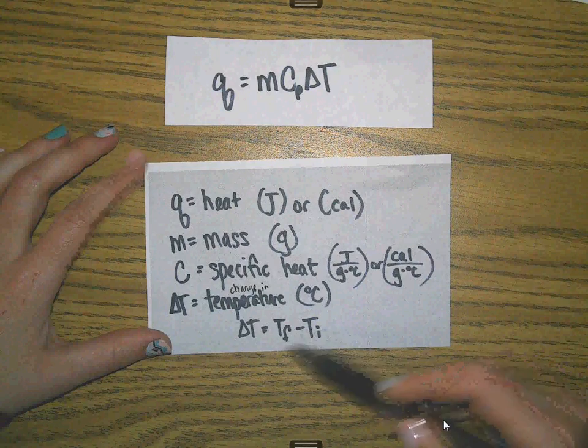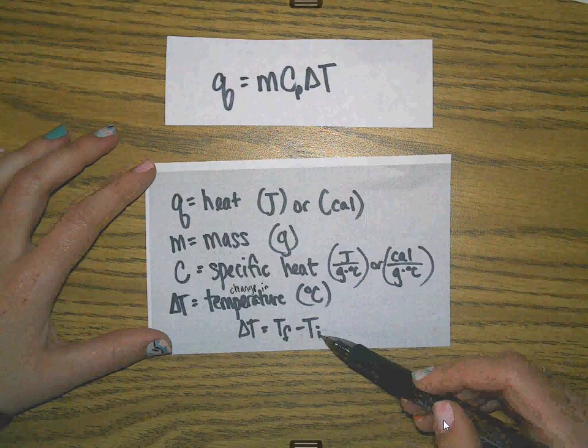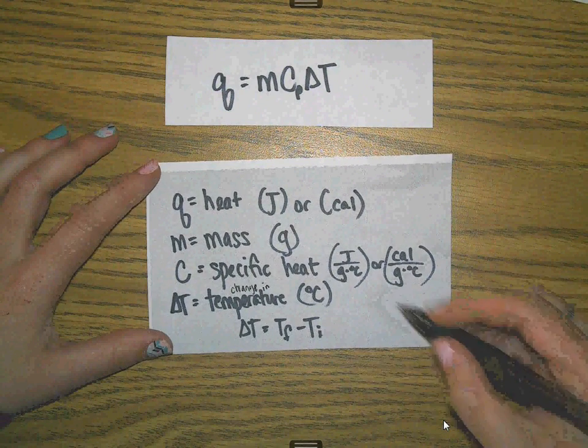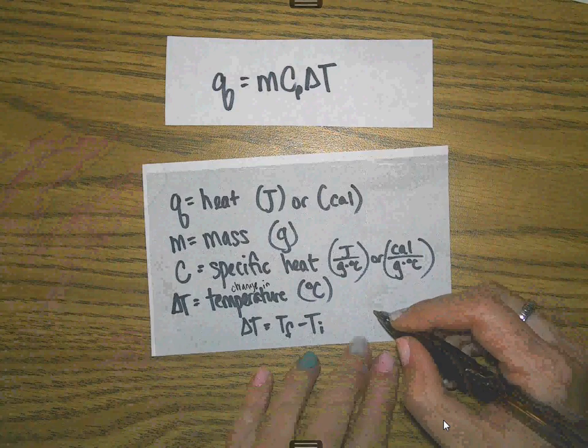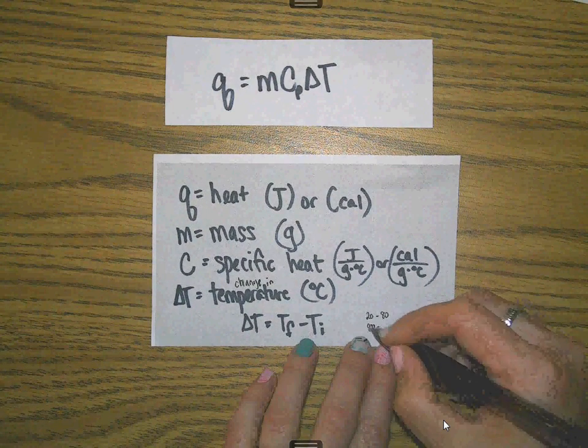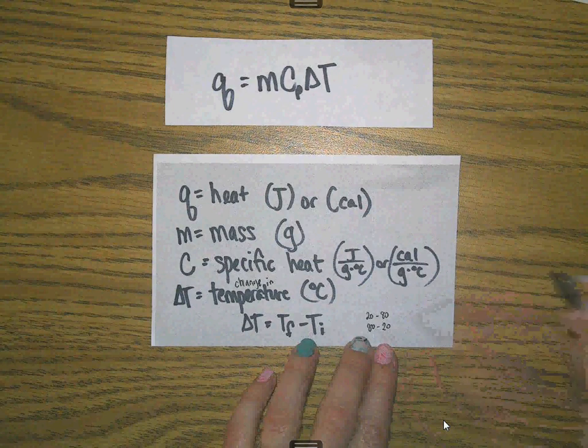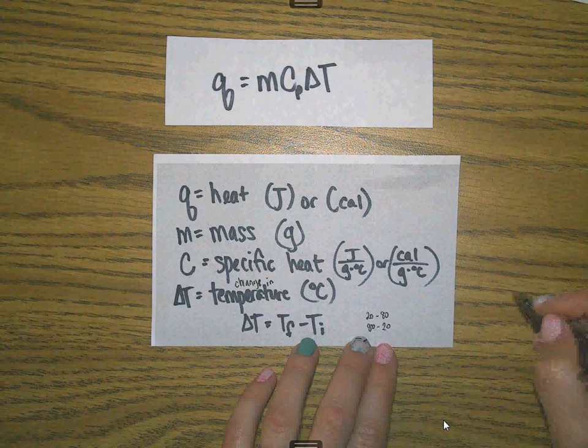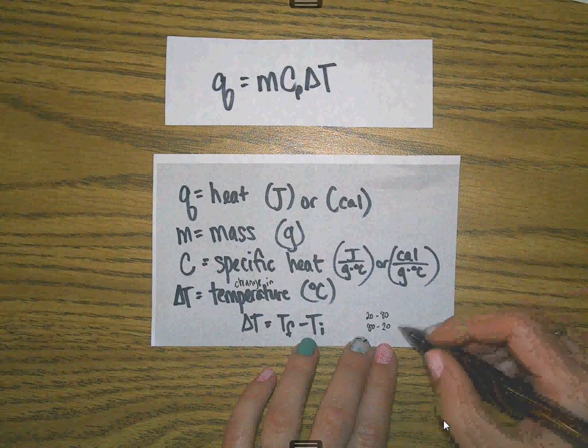It's very important that you get these two in the proper places because, for example, if I have something like 20 minus 80, that's going to give me a negative value, whereas 80 minus 20 is going to give me a positive value. So it's rather important that you get them in the right order.